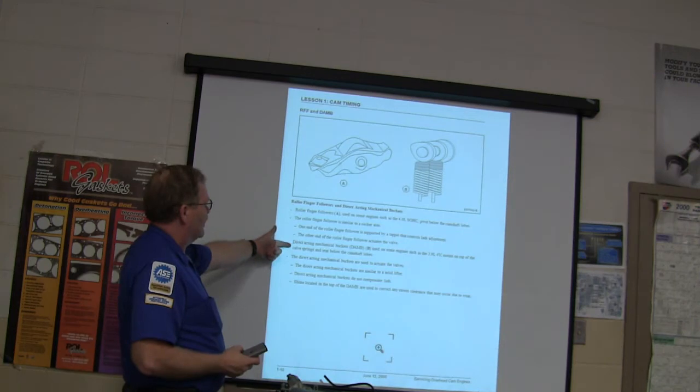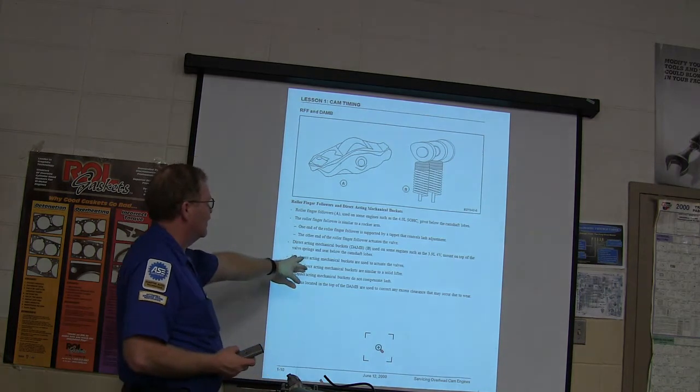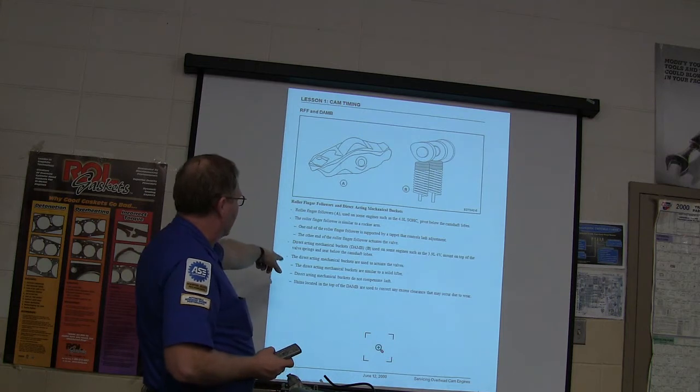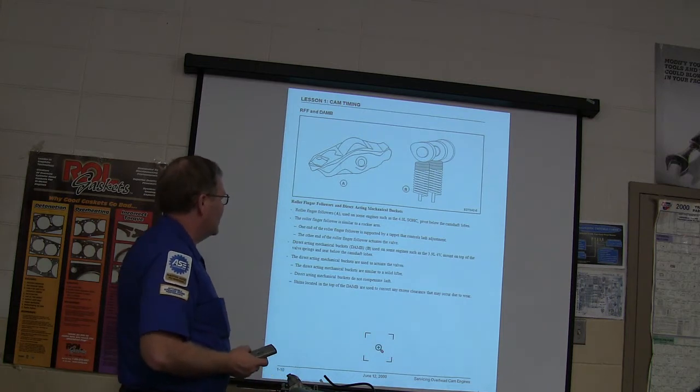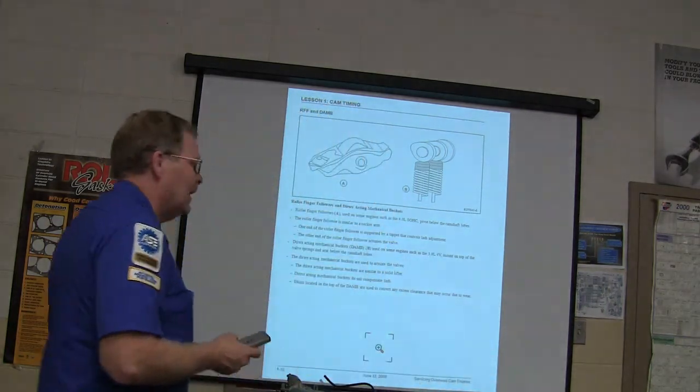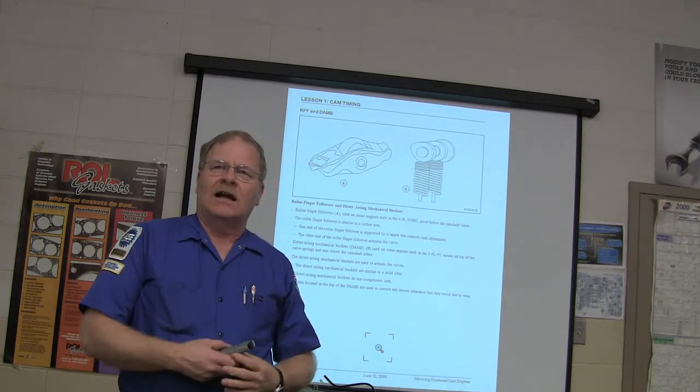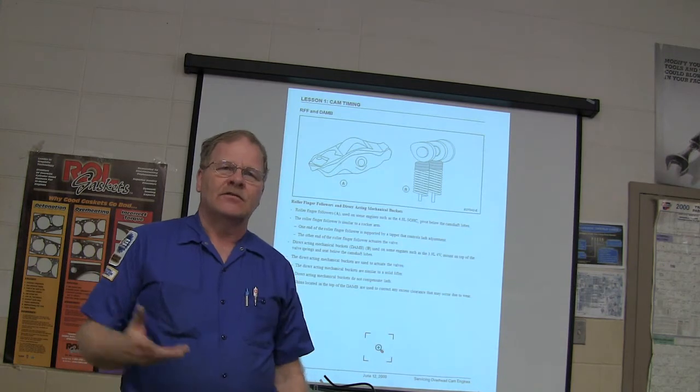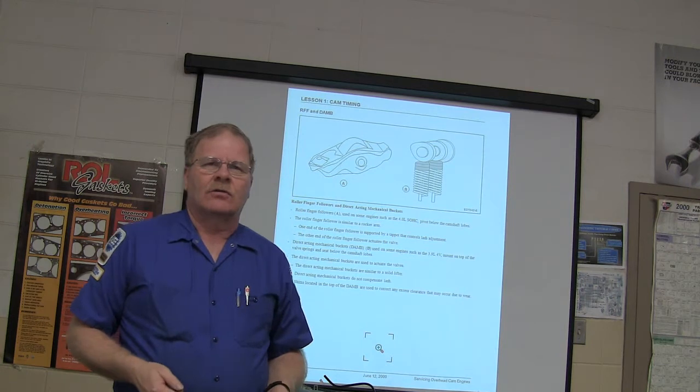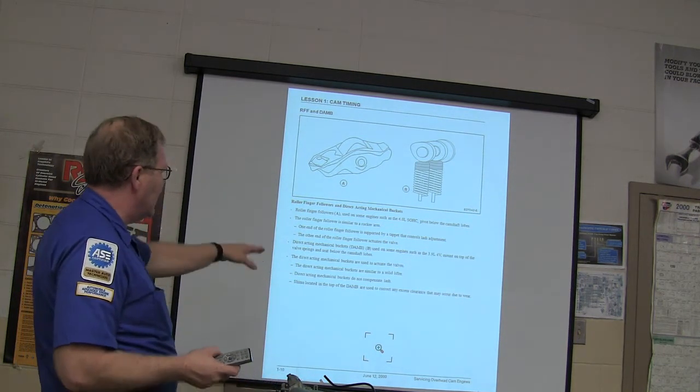The other end of the roller follower actuates the valve. Direct acting mechanical buckets are used on some engines, this is a 3.9 liter 4 valve. They mount on top of the valve springs and seat below the camshaft lobe. That's basically those little buckets. Direct acting mechanical buckets are used to actuate the valve. And that Lexus out there that we've got has got those little buckets on there. And the Volkswagen diesel rabbits that I worked on when I was in the Volkswagen dealership in 1983, we would have to adjust the valves on those very regularly because Volkswagen has a really strong maintenance schedule. I wanted the valves adjusted every so often. I can tell you a story about that, but I'm not going to.